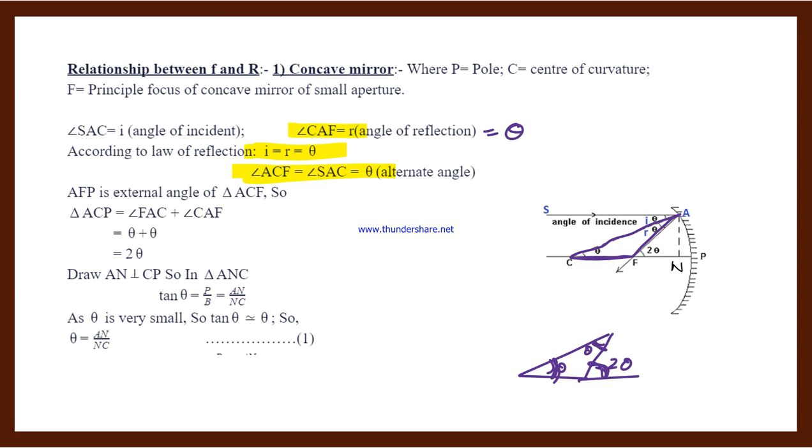Next, since i equals r, both angles are theta. So we take triangle ACF. We learned in 9th class that the exterior angle equals the sum of two opposite interior angles. So this angle is 2 theta, which is theta plus theta.